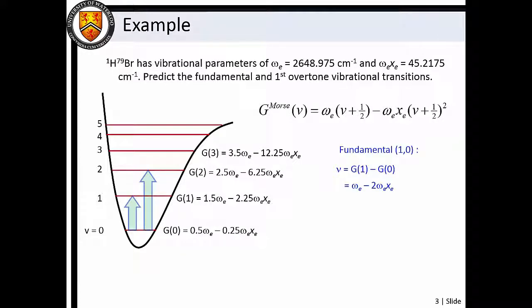Thus we find that the fundamental band has a wave number of omega e minus two omega e x e, and the first overtone band, a wave number of two omega e minus six omega e x e.